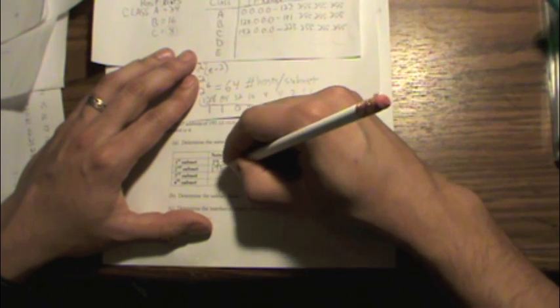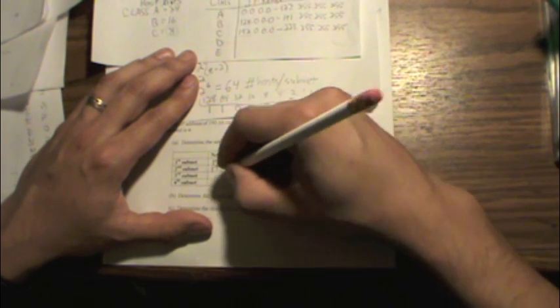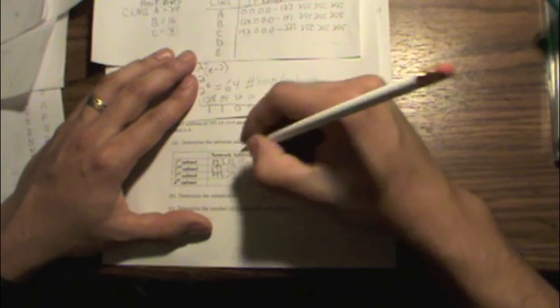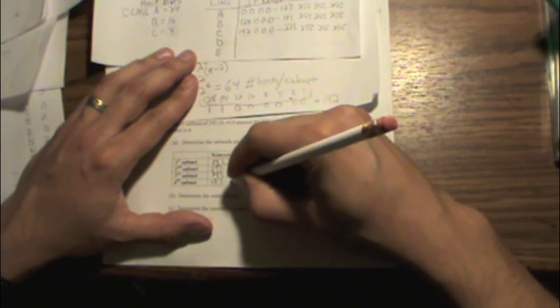So let's go ahead and write in the rest of the IP addresses here. 193.10.10, 193.10, writing a little bit crooked here, writing around the tripod.